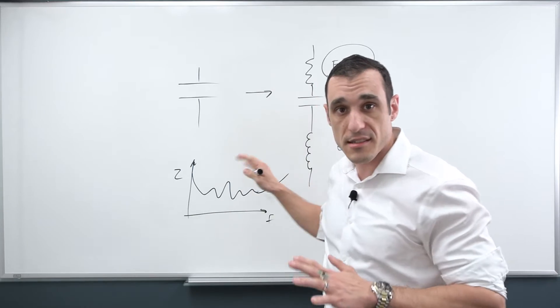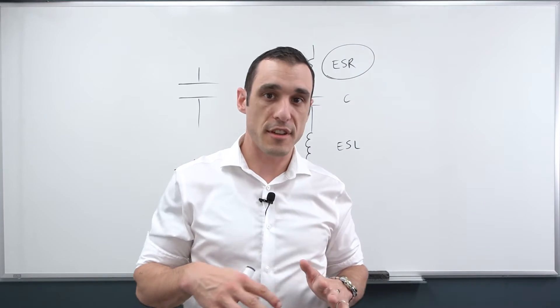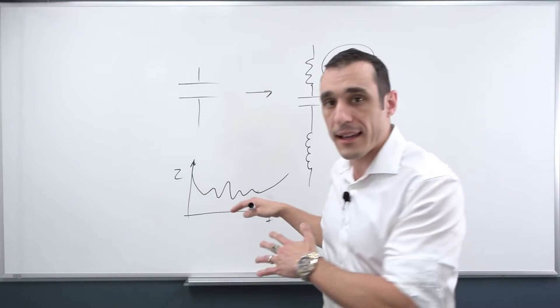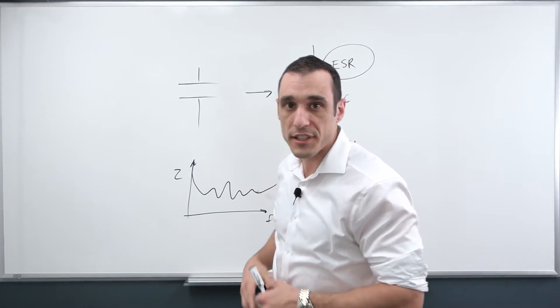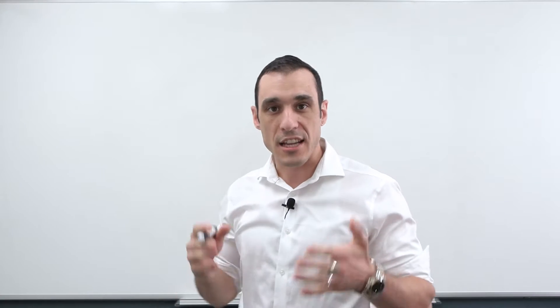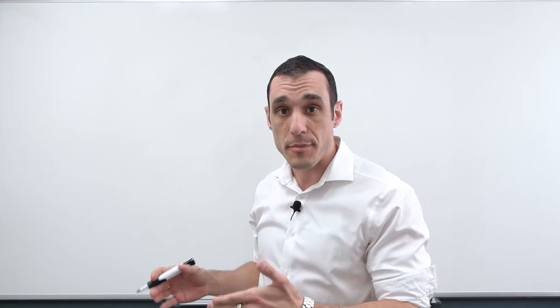So I'm going to erase all of this and if you haven't watched the previous video yet, go watch the previous video, come back, and then we'll look at this in a little bit more detail. Okay, so now what I want to do is look at what happens to the impedance in your PDN as you start adding capacitors in parallel in the PDN.